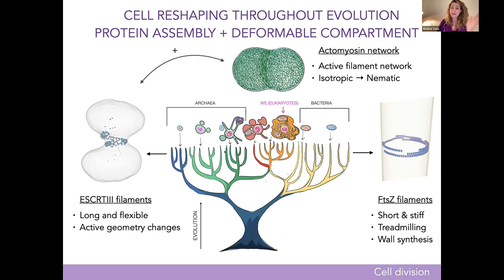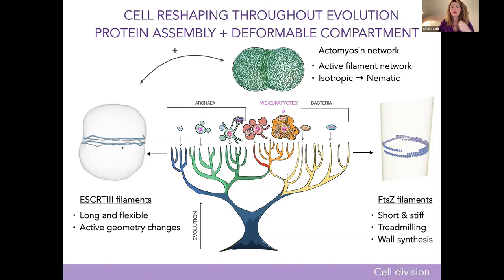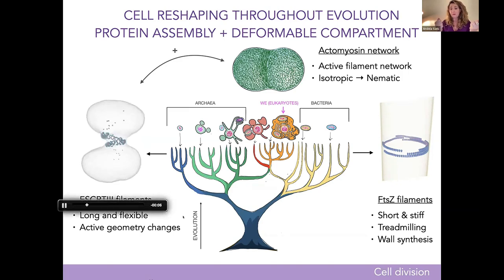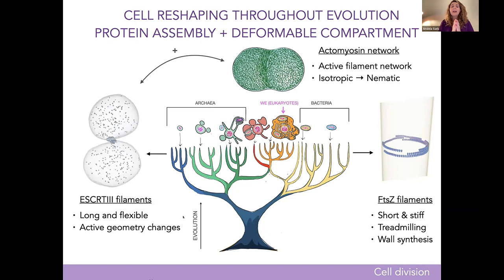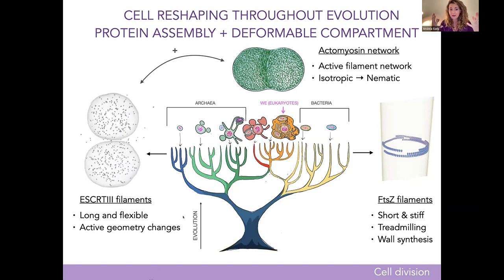On the other side is archaea. They're quite floppy, and what more evolved archaea use is something called ESCRT-III filaments, which are long and flexible — as opposed to short and stiff. They also form a ring in the middle, and they go through active geometry changes to split the cell in two.